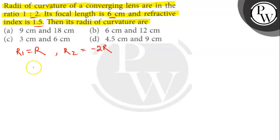Now applying lens maker's formula. The formula is 1/F equals (μ-1) times (1/R1 minus 1/R2). So we will put the values: 1/6 equals (1.5-1) times (1/R minus 1/R2).